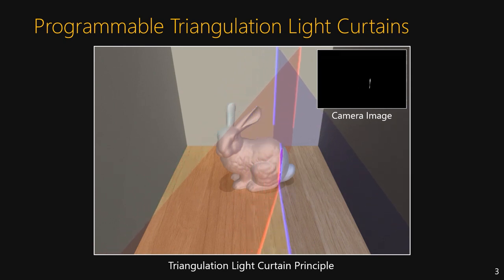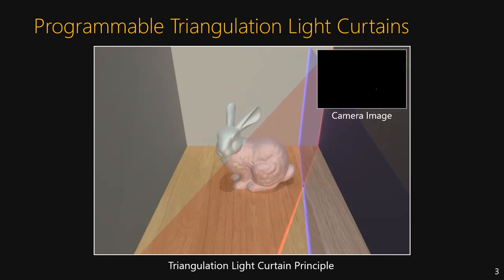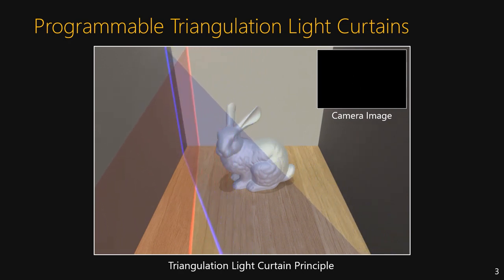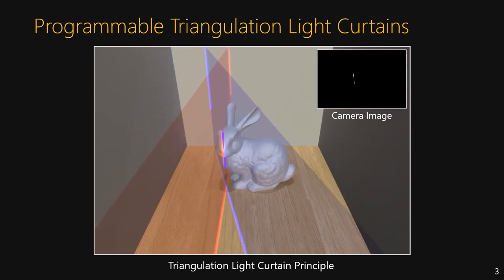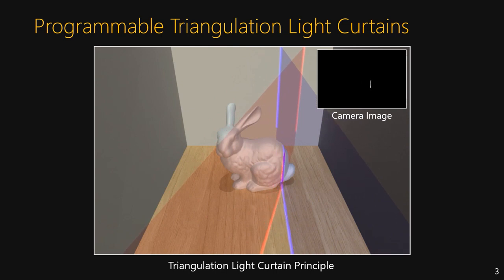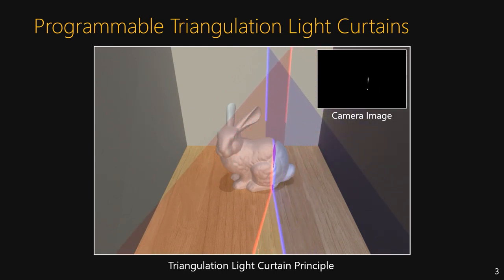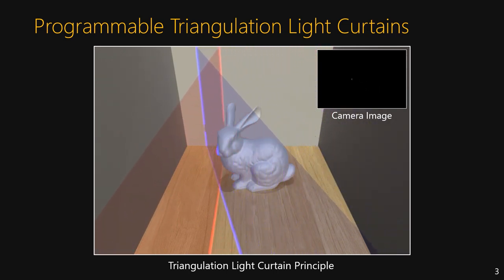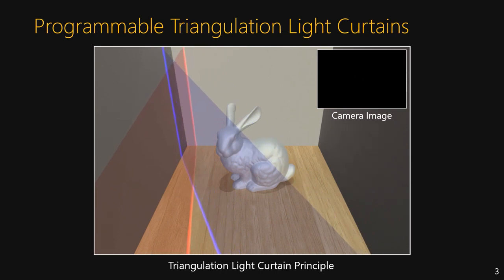By changing the angles of the planes, we can move the line and sample different lines in the scene. Now, if there is an object along this line, the light is reflected back to the camera and it sees the object. But if there is nothing at this intersection, the camera doesn't receive any light. And so a set of these lines forms a triangulation light curtain.